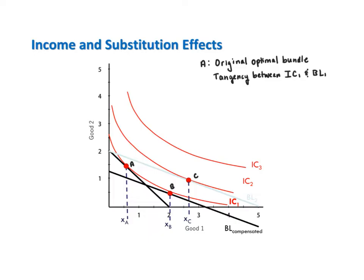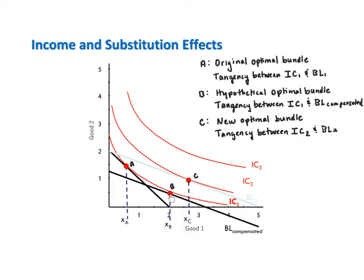Recall that bundle A is the original optimal bundle — a tangency between the consumer's original indifference curve and original budget line. Bundle C is the consumer's optimal bundle after the price of good X changes; C is a tangency between the consumer's new indifference curve and new budget line. And bundle B is a hypothetical optimal bundle — the bundle the consumer would choose if she started at bundle A and utility was held constant while the relative price, or the slope of the budget line, changed. B is a tangency between the original indifference curve and the compensated budget line.